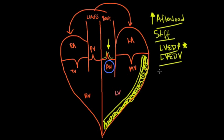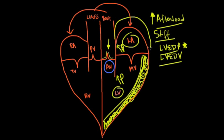Left ventricular end-diastolic pressure is the pressure in the left ventricle right before it contracts. If that pressure is very high — as happens in a stiff ventricle — then pressure is also high in the left atrium. As a result, left atrial size increases. The left atrial wall is very thin and not designed to withstand high pressure.